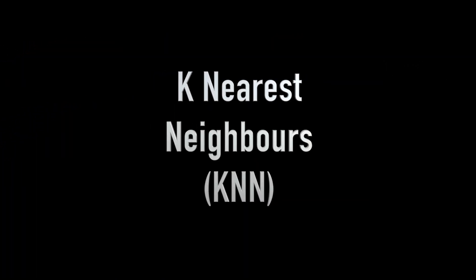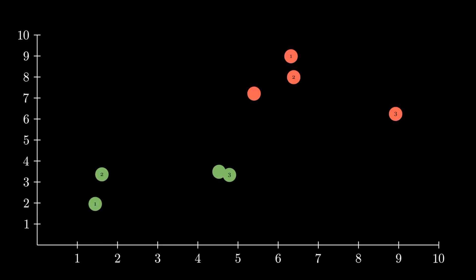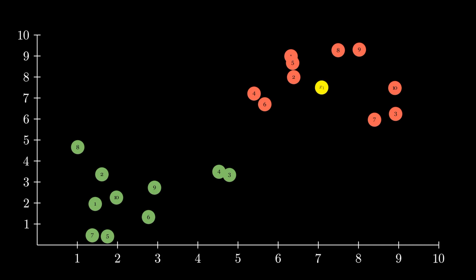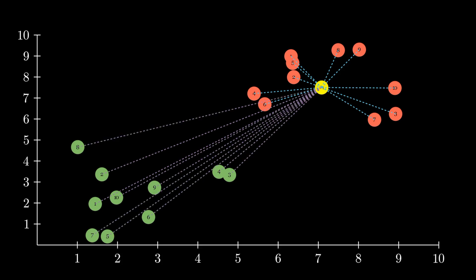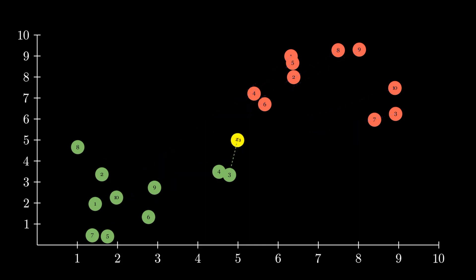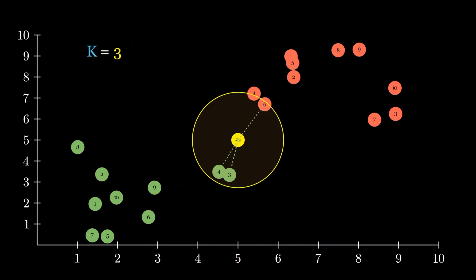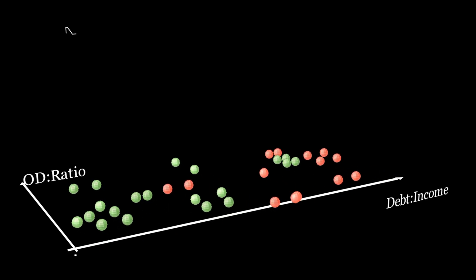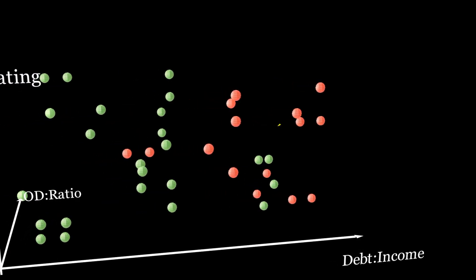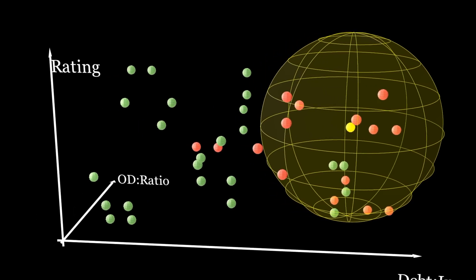K-nearest neighbors, or KNN, is a non-parametric algorithm that classifies a data point based upon the majority class of its K nearest neighbors. To predict the class of a new point, KNN finds the K points in the training data that are closest to it in the feature space and returns the most common class amongst these neighbors. The number of neighbors K is a key hyperparameter that needs to be tuned, and will affect which classification marginal points are assigned to. KNN makes the reasonable assumption that similar data points tend to have the same class. The optimal K balances fitting the local structure of the data with a small K and avoiding noise from individual points with a large K.